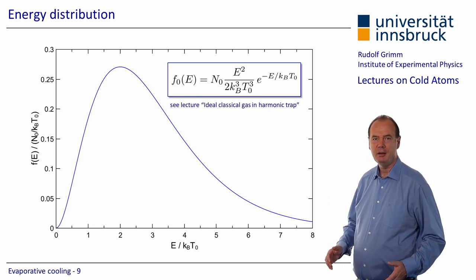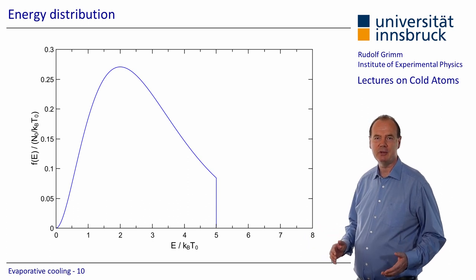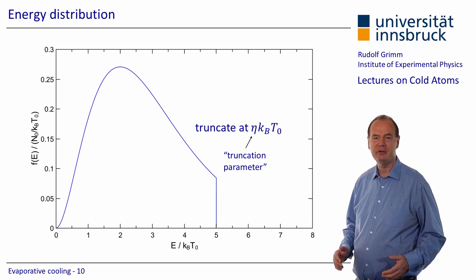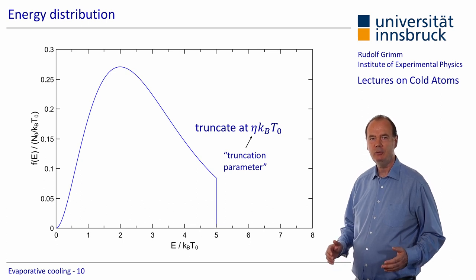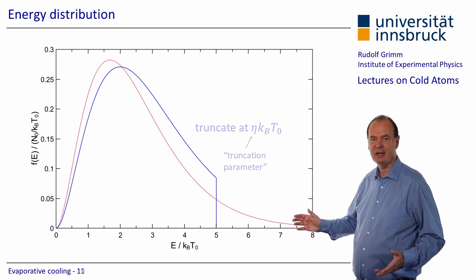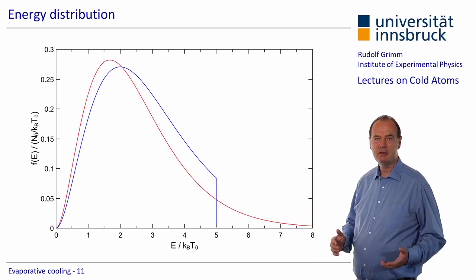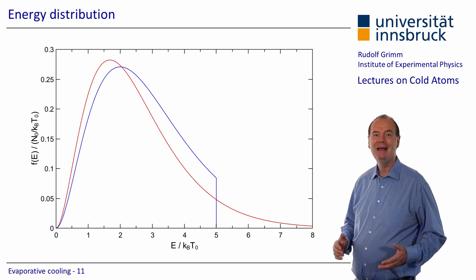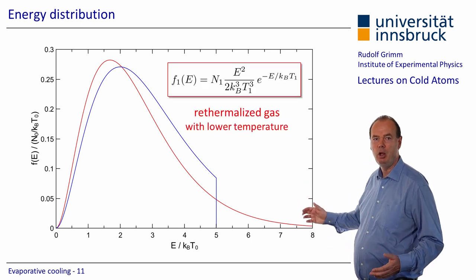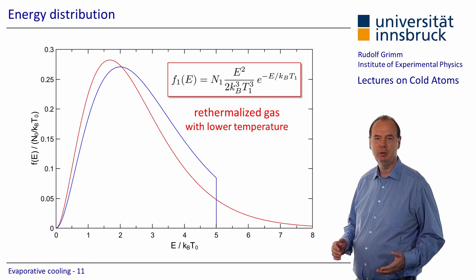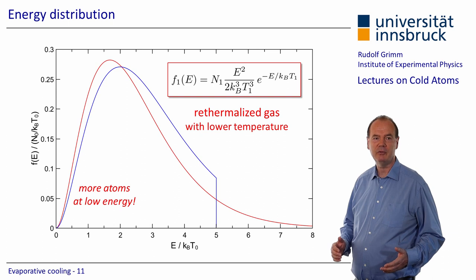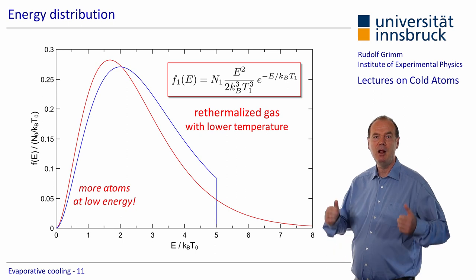Now we apply the evaporation cut, in our example at 5 times the thermal energy. We define a truncation parameter eta, which is the energy threshold relative to the thermal energy k_B T. We switch off the cut and let the sample re-thermalize. The re-thermalization process preserves the atom number and the total energy, which leads us to a new thermal distribution with a temperature T1 lower than the initial temperature T0. And we have more atoms at low energy — this means an increase in the phase space density, a step of phase space cooling.